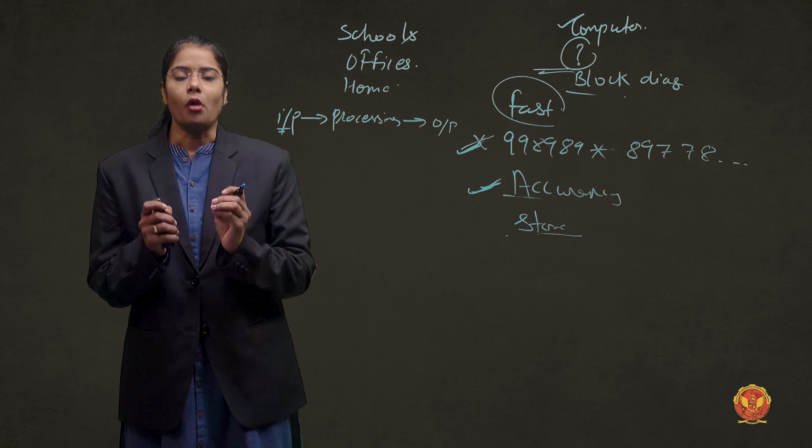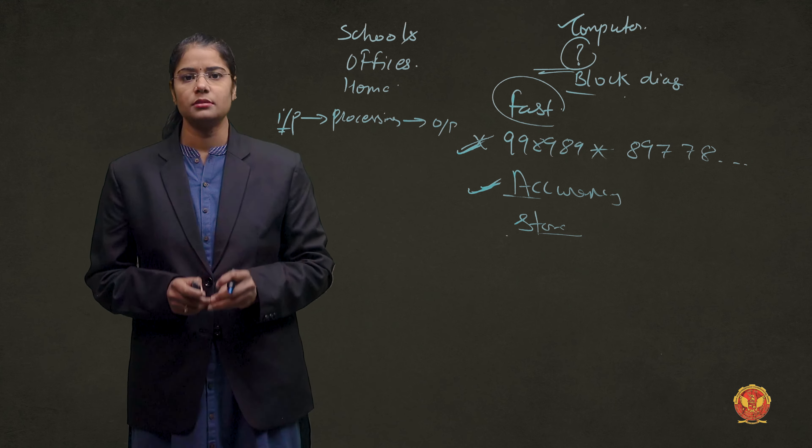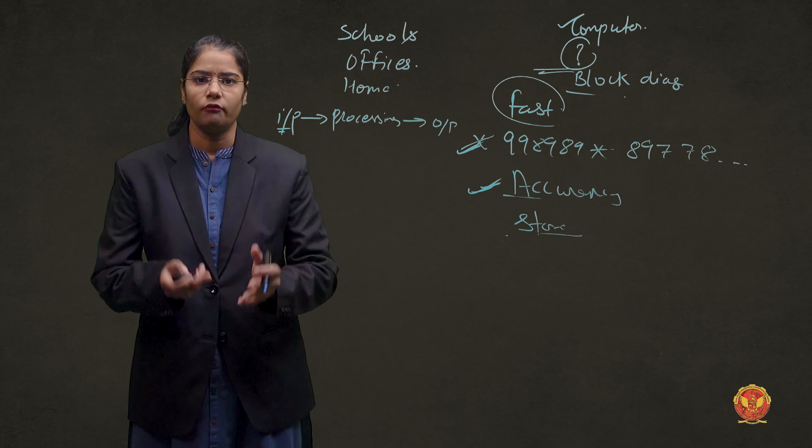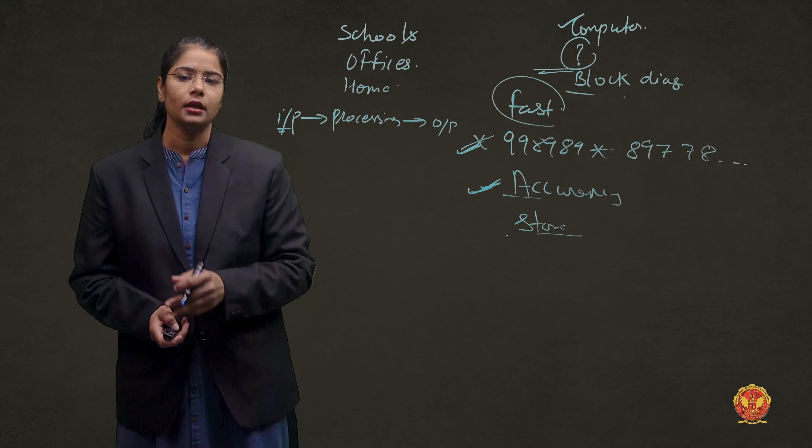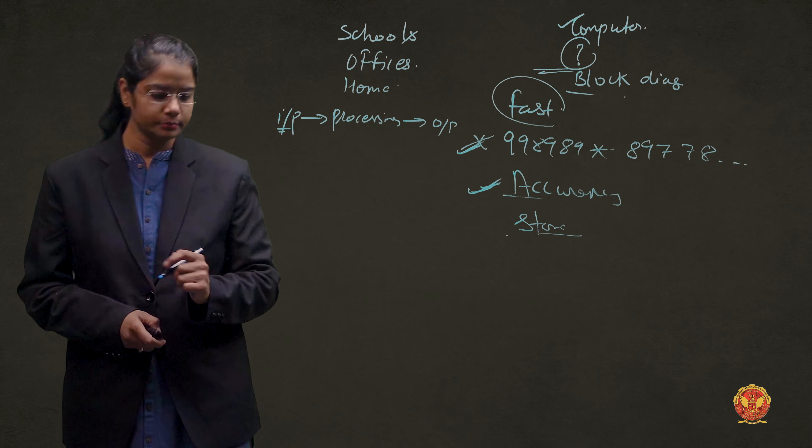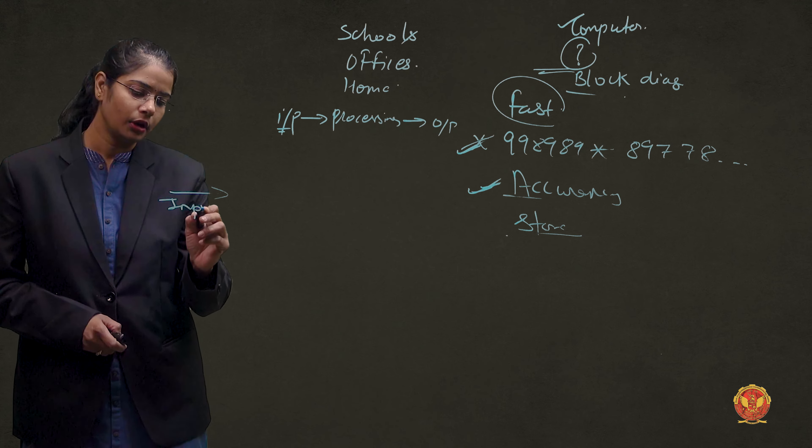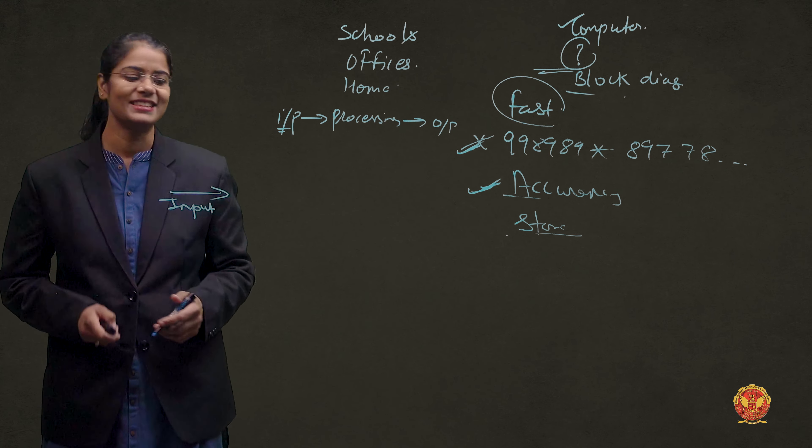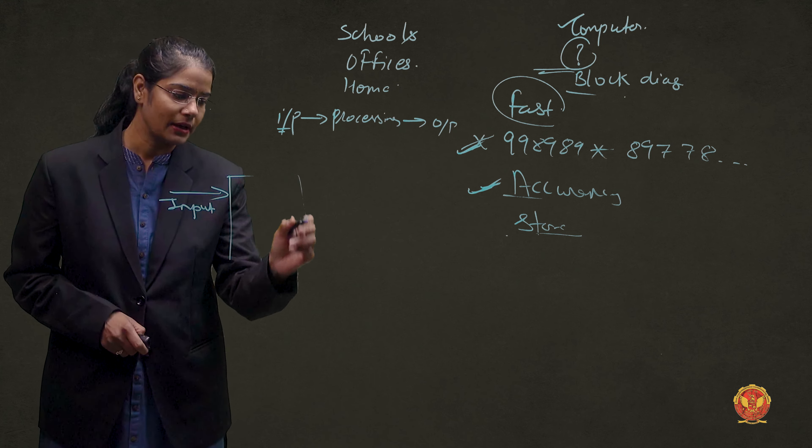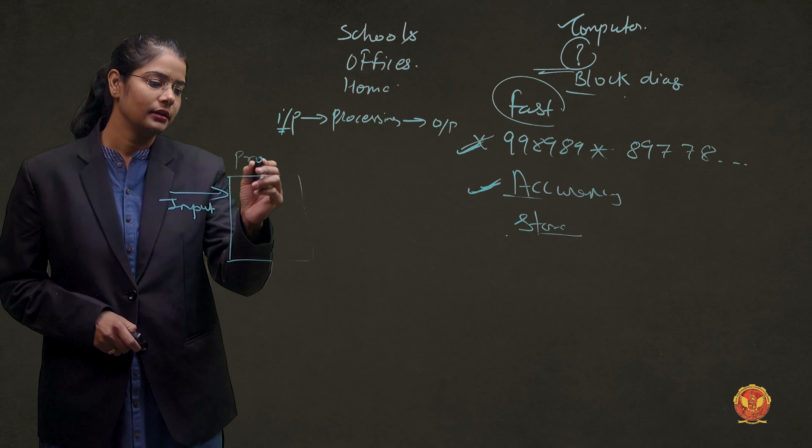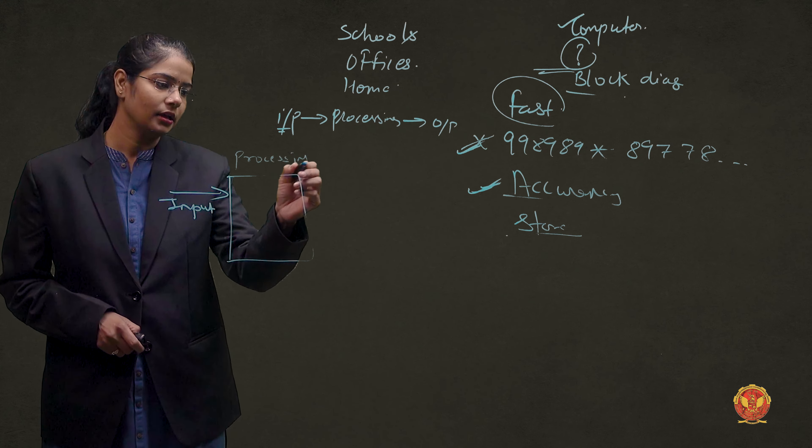Now, if I tell you a block diagram about a computer system or the structure of the desktop system, let's see how it looks. What I have told you here is we will give input. So, here is input through input devices. After that, we have a processing unit.